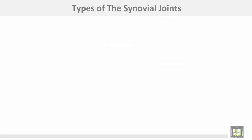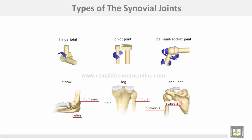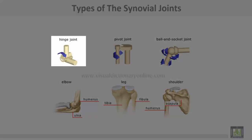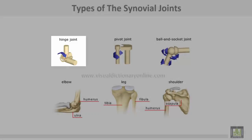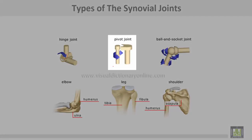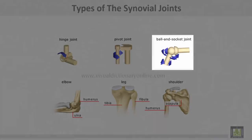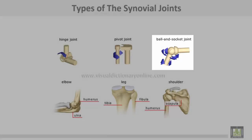Here are visual examples of different synovial joint types: this is the hinge type at the elbow joint; this is a pivot joint between the radius and ulna; and this is a ball and socket joint as seen at the shoulder and hip joints.